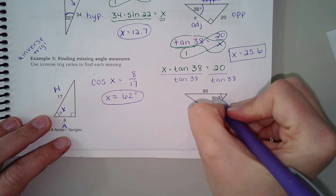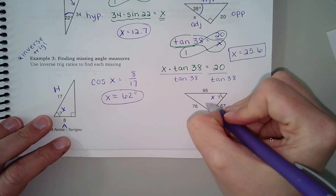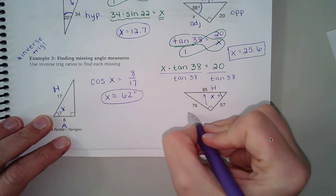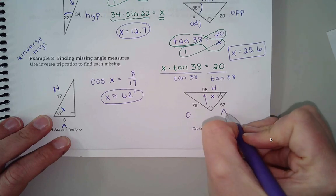So if this is my x, my hypotenuse is across from the 90. From x, this one would be the opposite, and this one would be the adjacent.